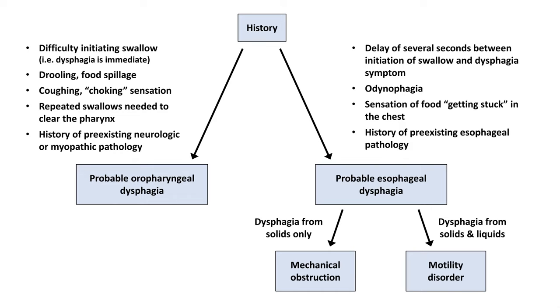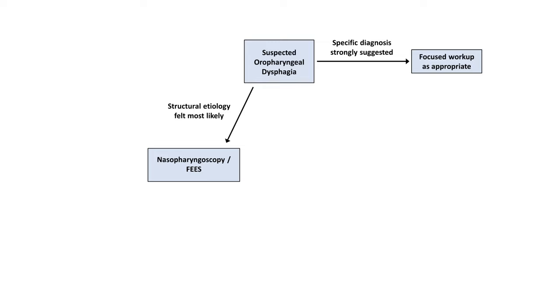From here, the algorithm diverges based on whether we suspect oropharyngeal or esophageal pathology. In suspected oropharyngeal dysphagia, if a specific diagnosis is strongly suspected, for example a neurologic disease based on the neural exam, then continue with a focused workup as appropriate. Otherwise, if a structural etiology is felt to be most likely, including malignancy, the next step is typically nasopharyngoscopy with or without endoscopic evaluation of swallowing. If a neuropathic or myopathic etiology is felt most likely, then a videofluoroscopic modified barium swallow is typically done first. If whichever of those two that's done is either normal or non-diagnostic, it's usually followed by the other.